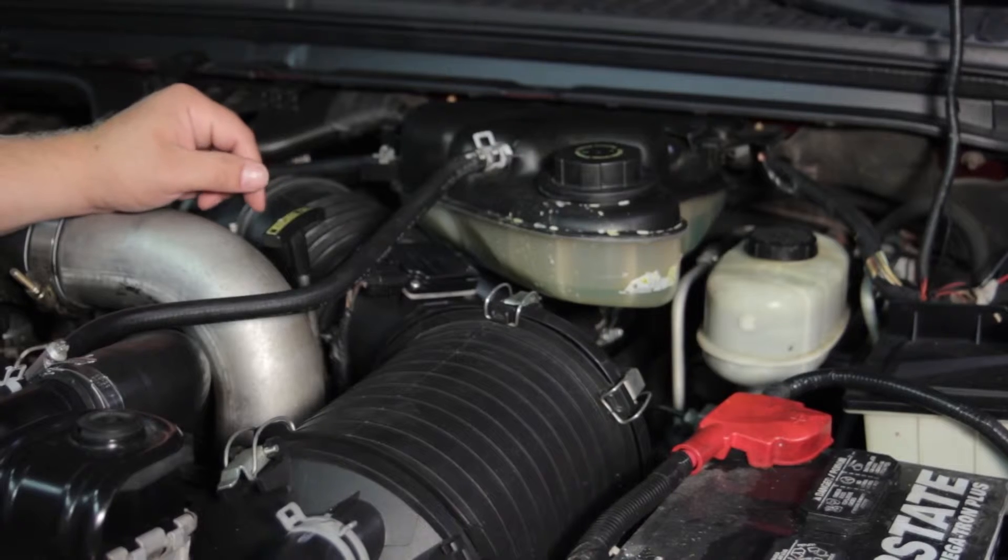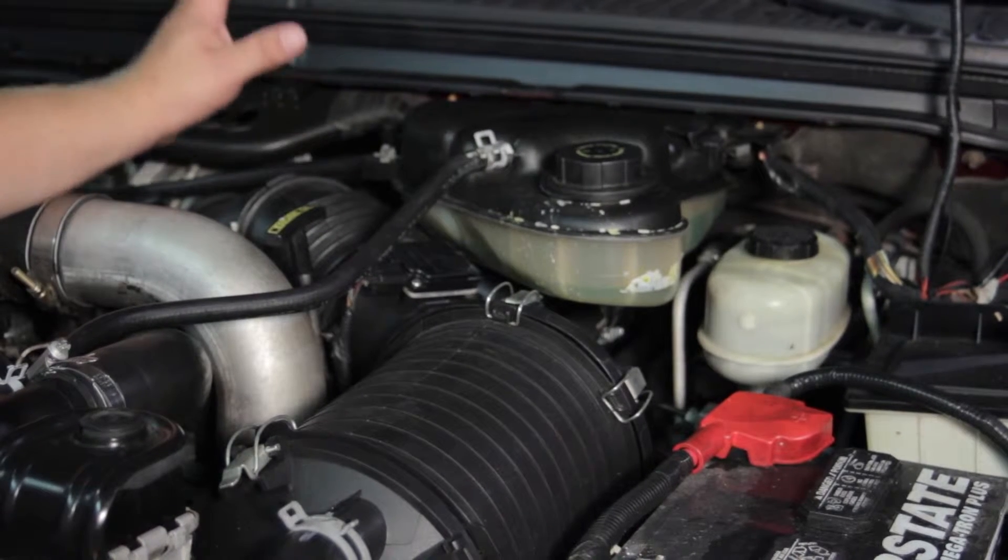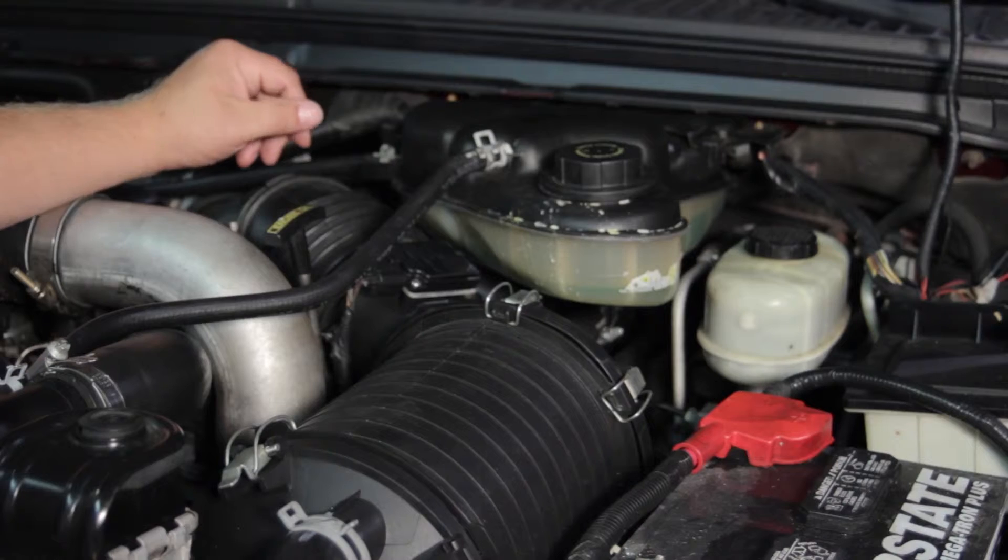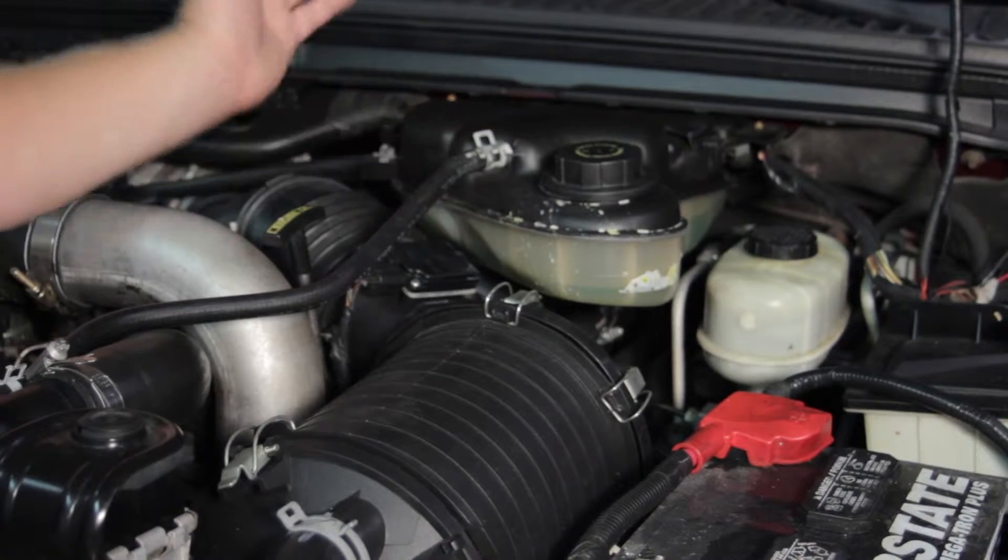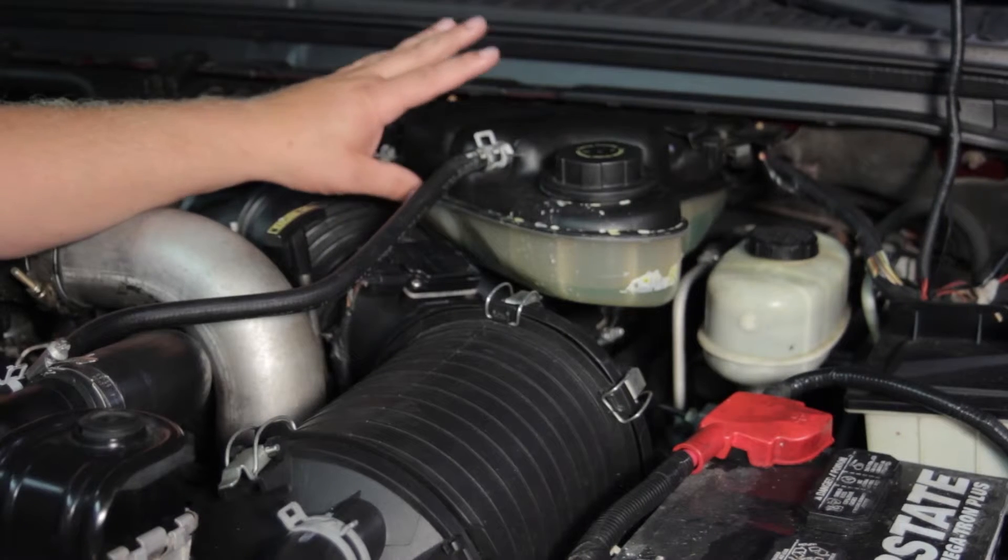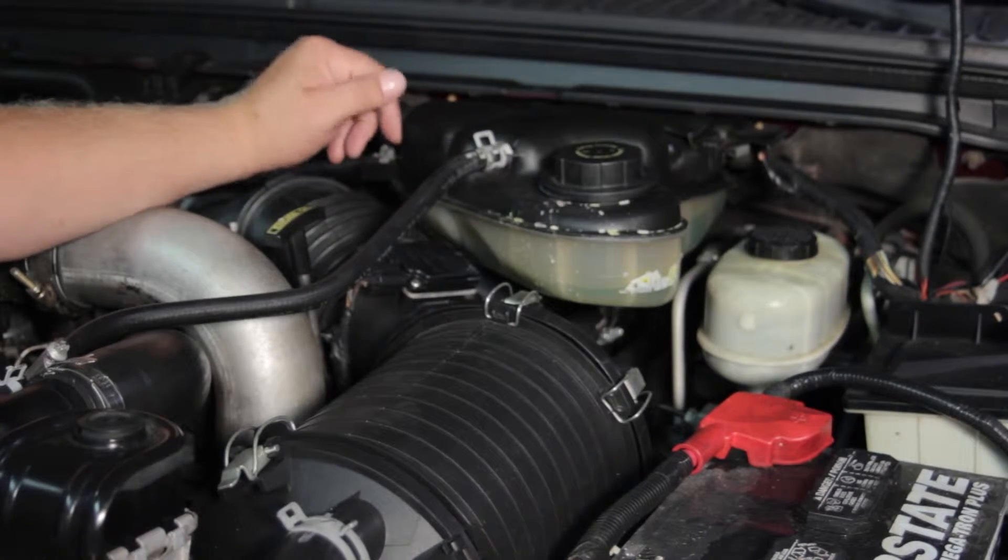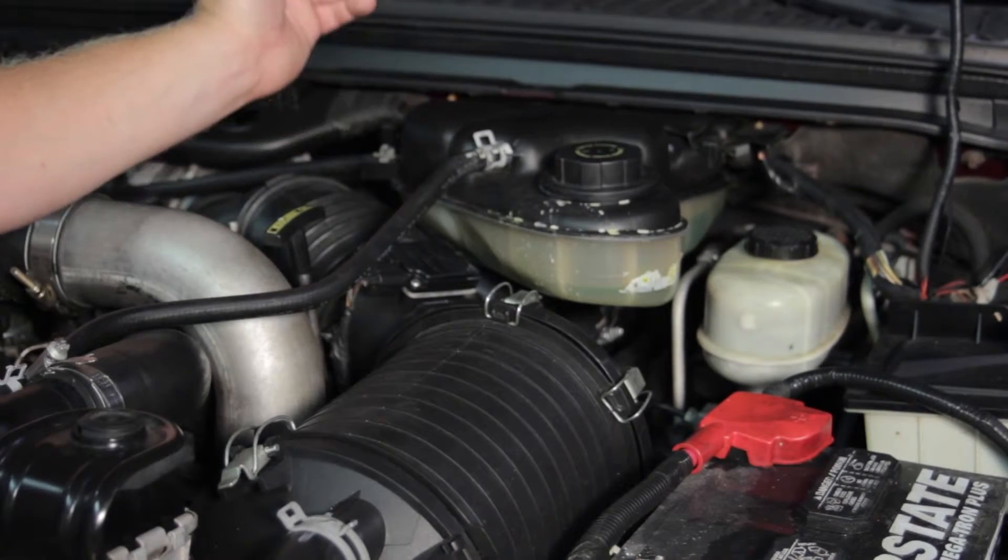Well first off we have to remove the FICM or the fuel injector control module as it's referred to. So that's mounted down here underneath this bottle. Now in the gasoline world we might refer to this as an overflow bottle. In the diesel world it's called a degas bottle or degas bottle.